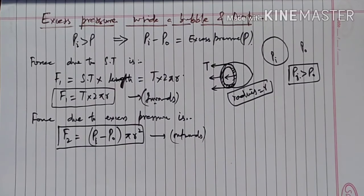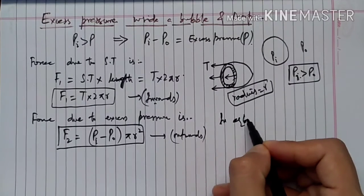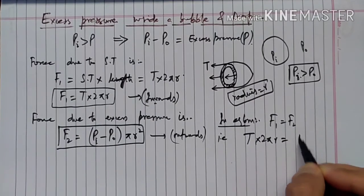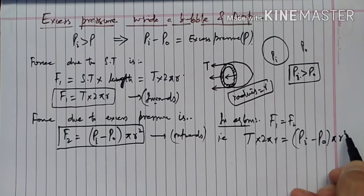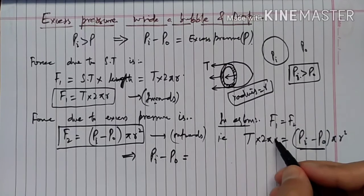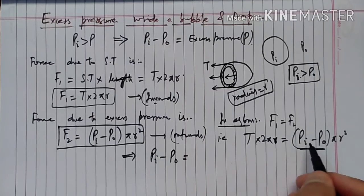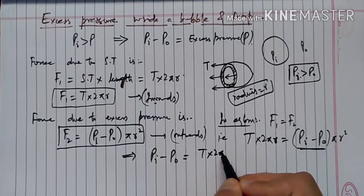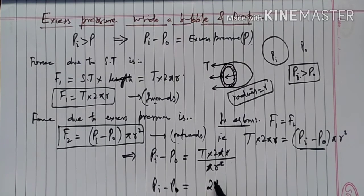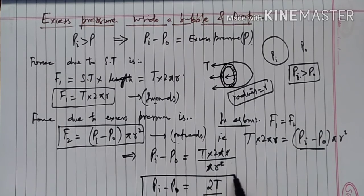For the bubble to exist in equilibrium, these two forces must balance: F1 = F2. So T × 2πR = (Pi − P0) × πR². Solving for excess pressure: Pi − P0 = 2T/R.